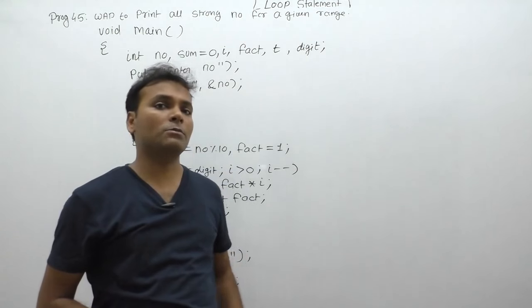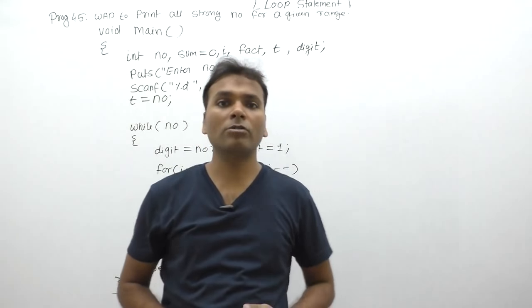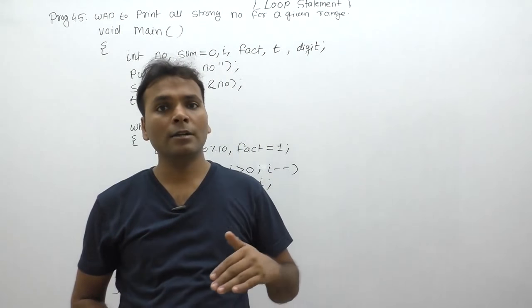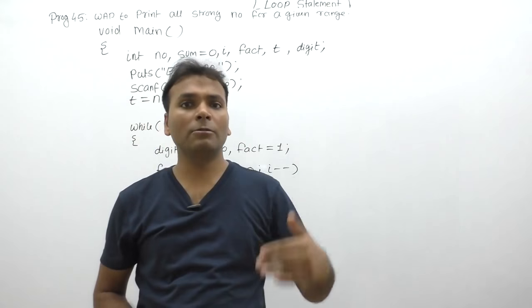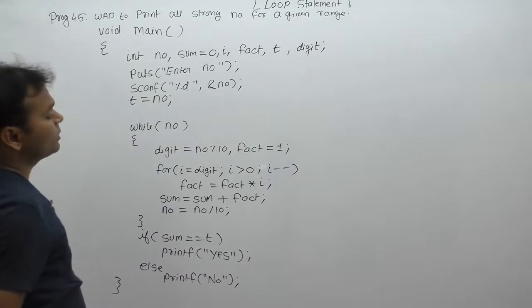From a to b. Suppose a value is 100 and b value is 1000, then in this case we display all strong numbers between 100 and 1000. This is the same as previous program 44.